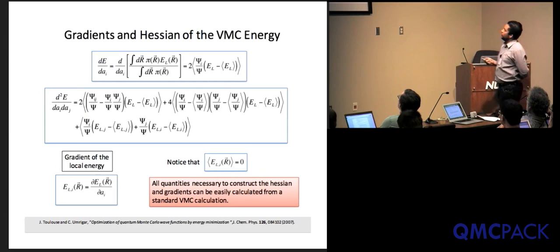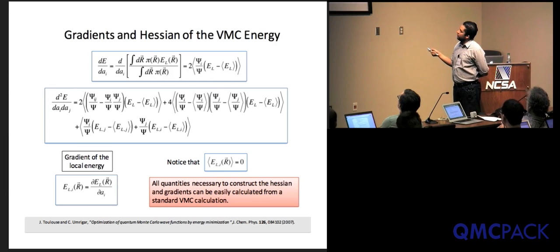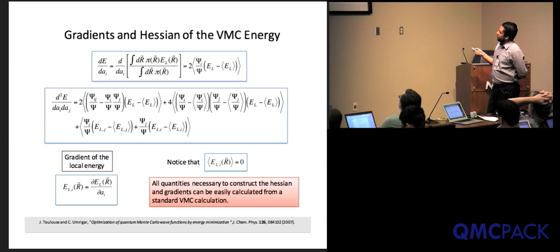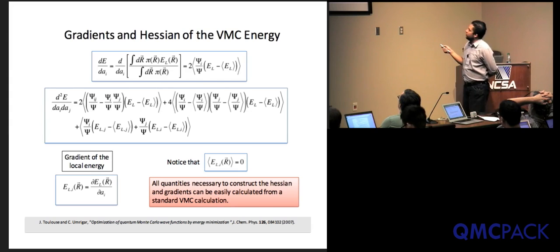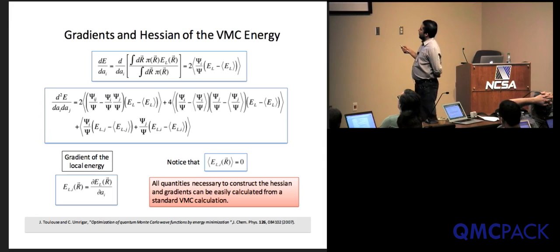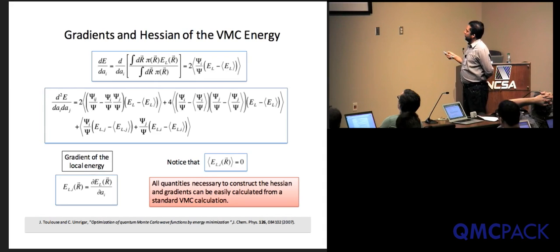The equations for the derivative of the energy with respect to an arbitrary parameter can be rewritten such that brackets represent averages with respect to the distribution. The gradient is the average of the logarithmic derivative of the wave function times the shift between the local energy and its average. The second derivative is much more complicated and requires second-order derivatives of the wave function — which is what we want to avoid.